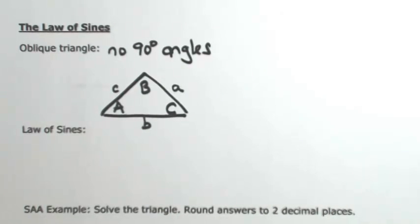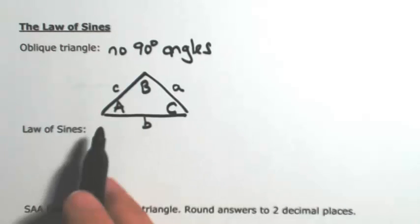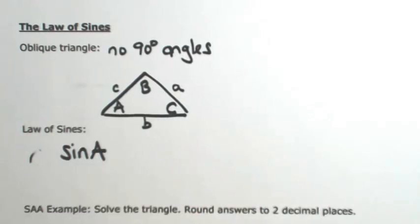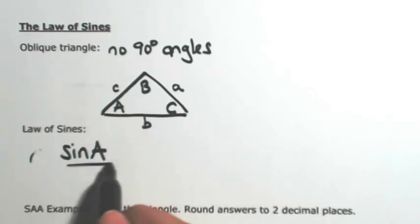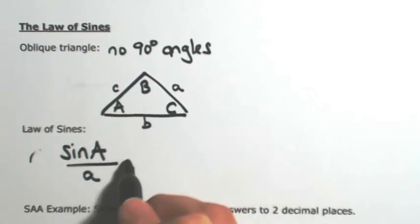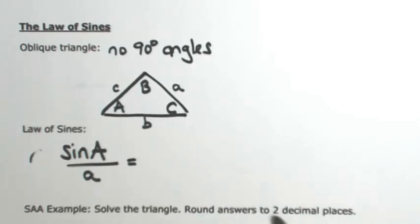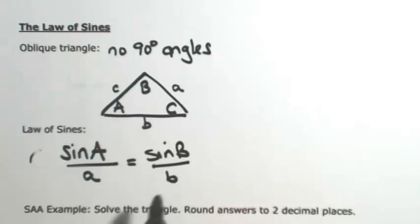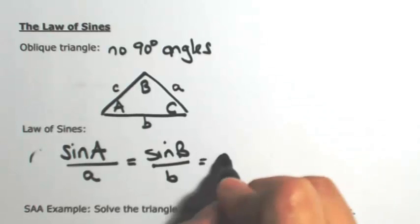Anytime you have an oblique triangle, you cannot apply right triangle trigonometry. So we need something different. The first thing we'll look at is the Law of Sines. The Law of Sines states that if I take sine of angle A, its ratio with side a will be proportionate to sine of angle B and its ratio with side b. This will also be proportionate with sine of angle C over side c.